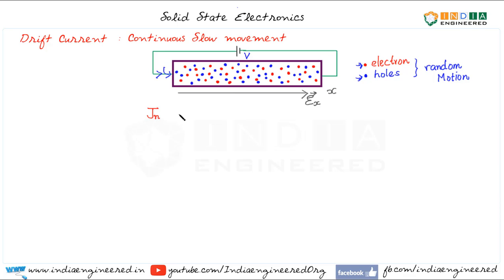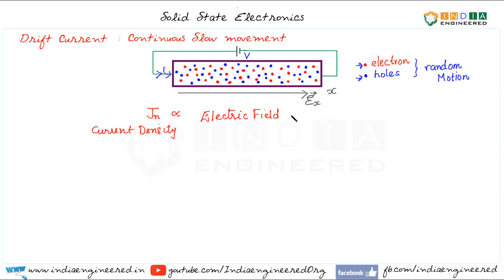It is reasonable to assume that drift current density will be proportional to the applied electric field — higher the electric field, higher the current density. Here we are considering current density due to electrons, proportional to the electric field in the x direction. More charge carriers means more current in the material.